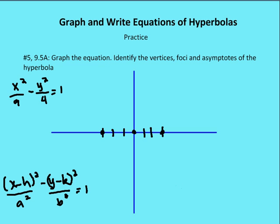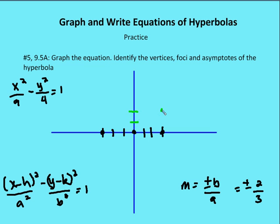The formula for the slope for a horizontal transverse axis is going to be plus or minus b over a. In this case, we know that b² is four, so b has to be two, and we know that a is three. So our slope is going to be plus or minus two over three. From the center, we need to count up two units and over three. Count up two and over three to the left. Count down two units and over three, and count down and to the right three.